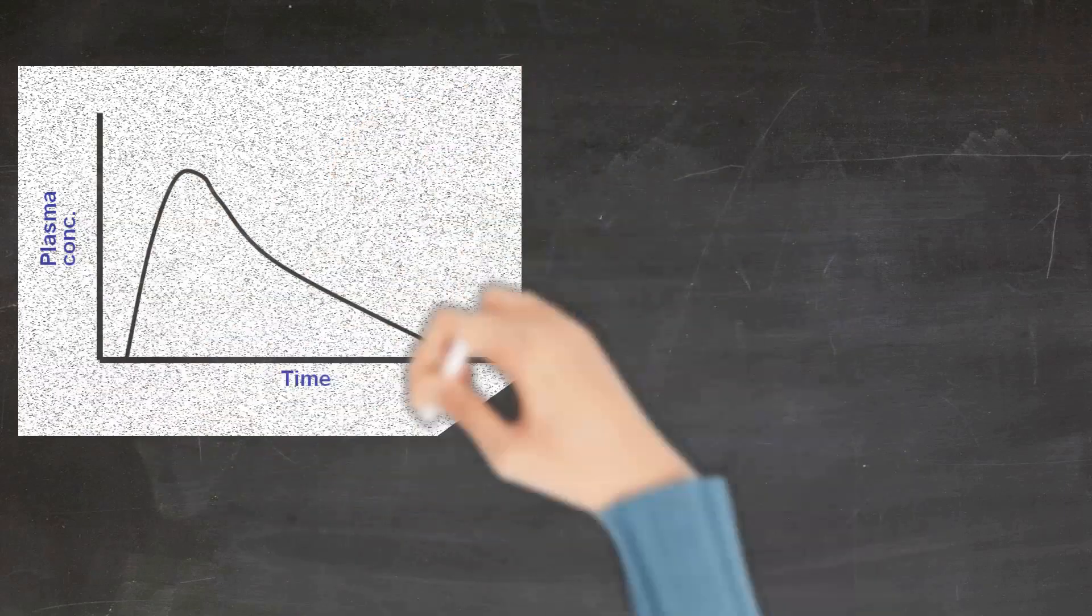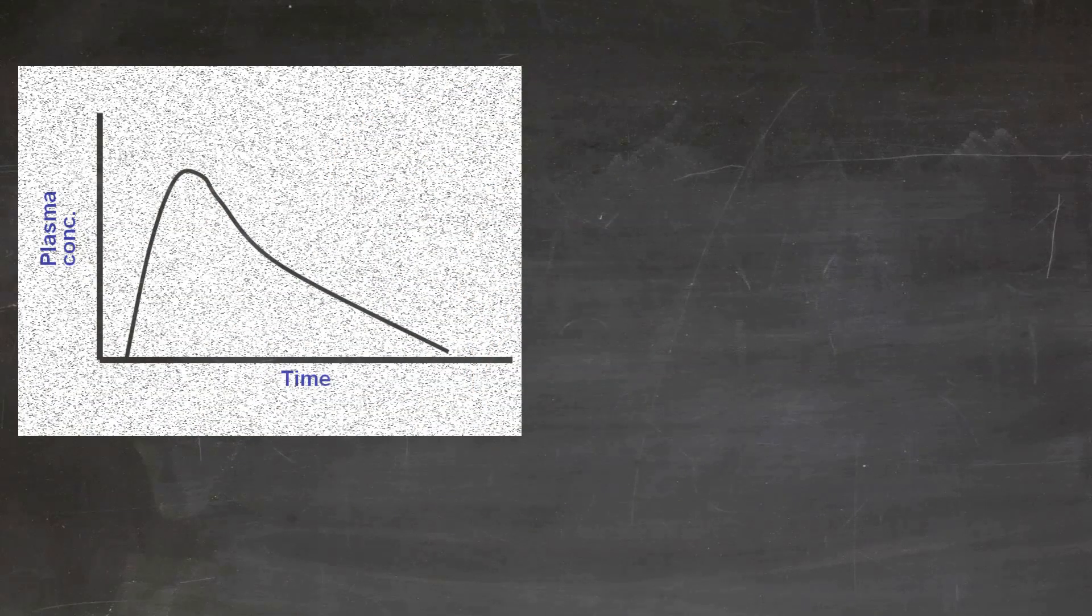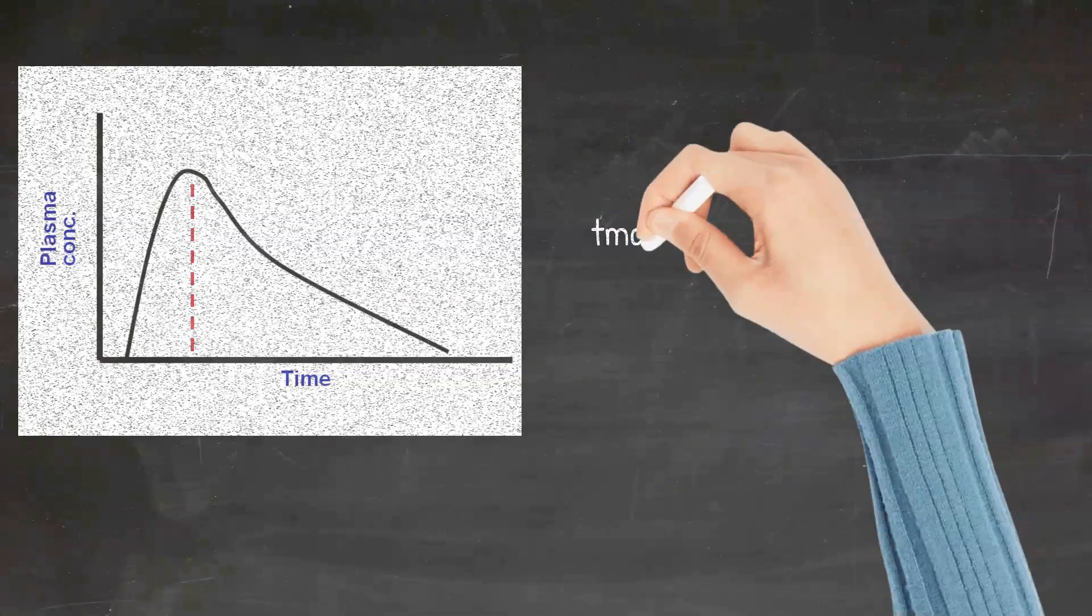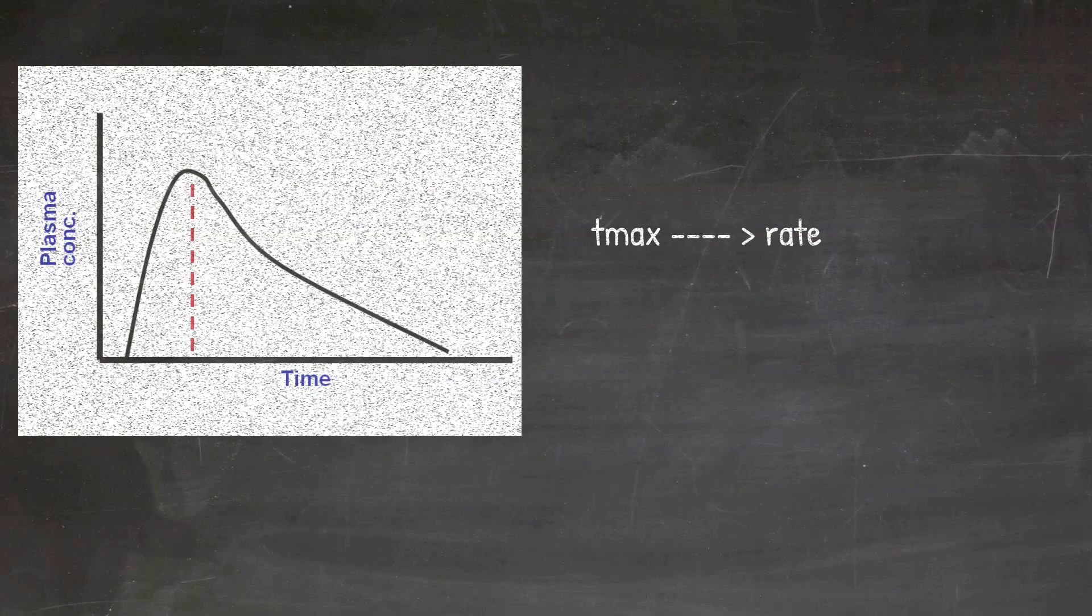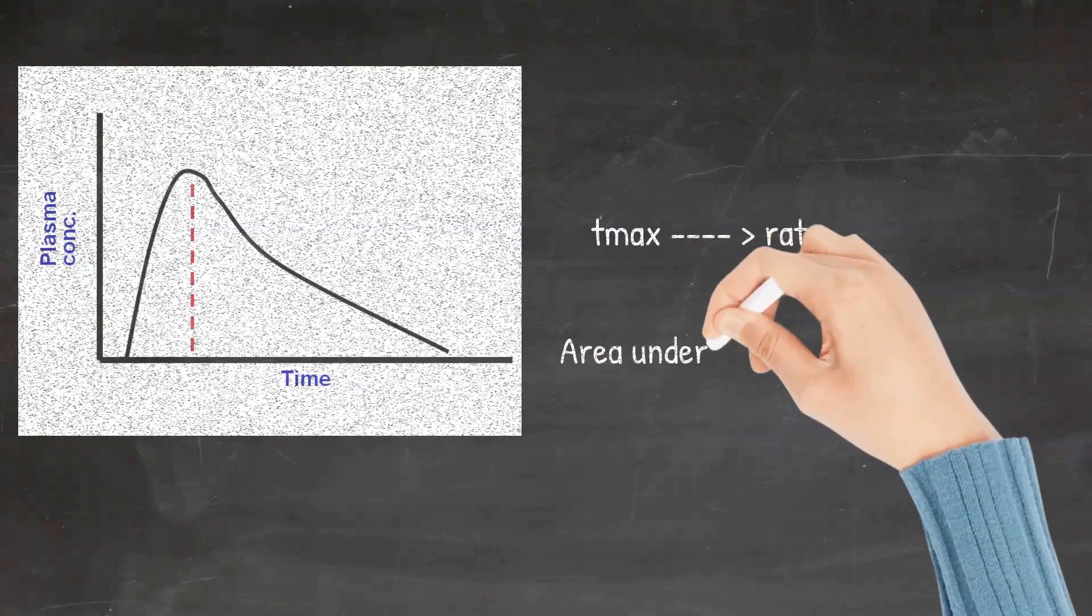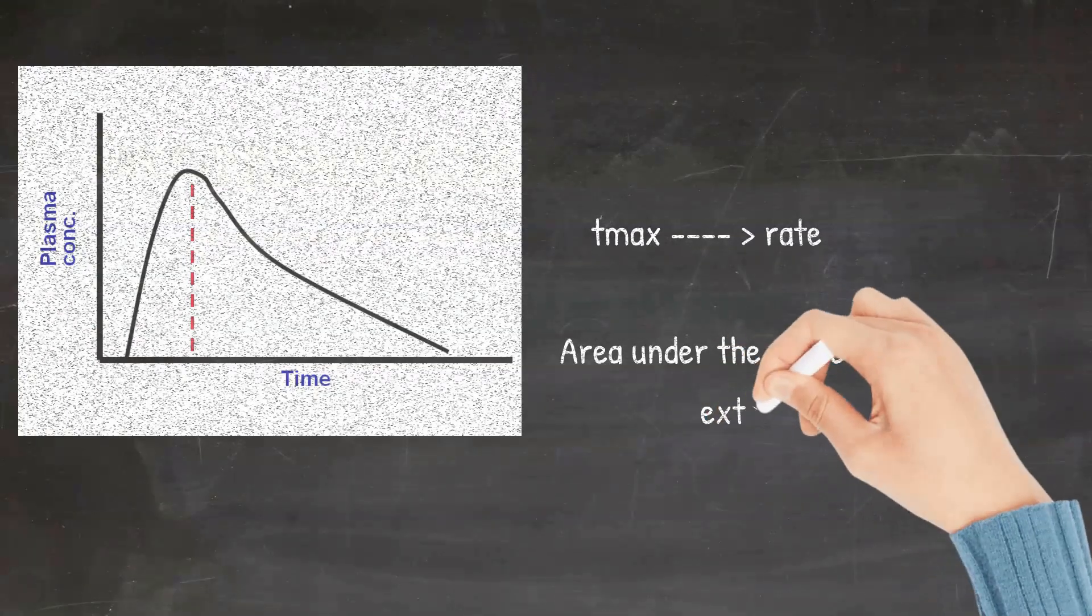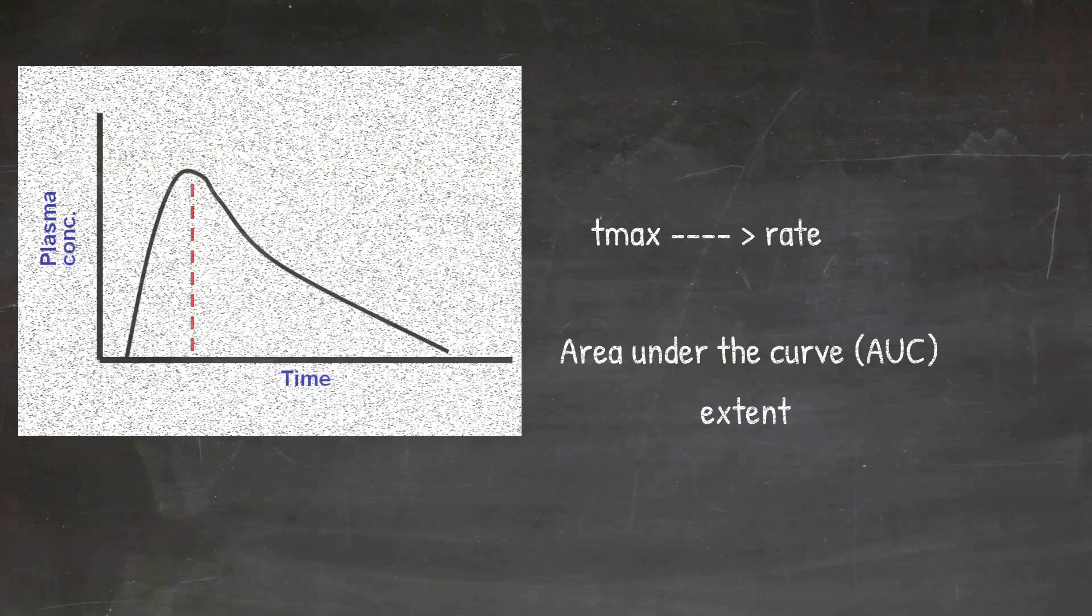If you plot a plasma concentration versus time graph of a drug which is taken orally, you will get a graph somewhat like this. The time taken for the drug to reach the maximum concentration is called Tmax. The Tmax of the drug gives you an approximate idea about the rate of absorption of the drug, whereas the area under the curve of such a graph would give you an idea about the extent of absorption.